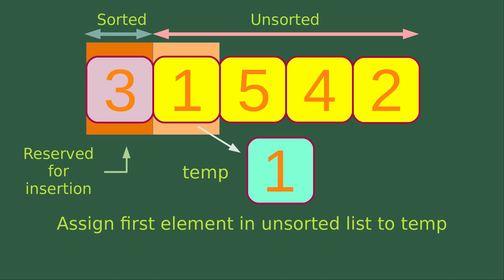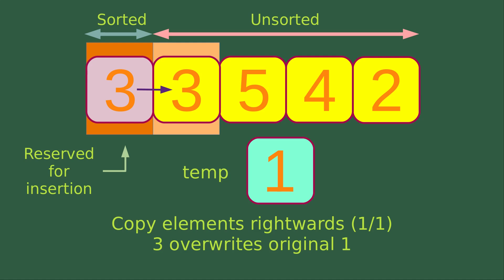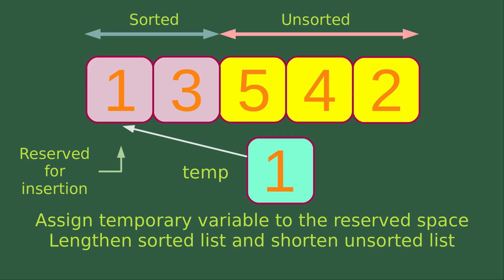According to our previous diagram, we already know that there is a place for the insertion of the temporary variable. Now I would copy the elements rightwards. Since I have only one element to do the shifting, I will simply do the shifting once. The shifting is achieved by copying the element rightwards, so the value of 3 would overwrite the original value of 1. After the shifting, I would assign the temporary variable to the reserved space, so the first element of the whole list will become 1. Then I can lengthen the sorted list and shorten the unsorted list.